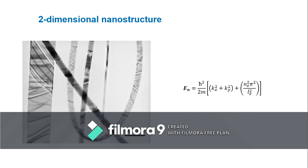Now let us discuss about two-dimensional nanostructures. Two-dimensional nanostructures are mainly extended in two dimensions and one of their dimensions is in the nanoscale. Along the third dimension, which is in nanoscale, the motion of the electron is quantized. For example, in a two-dimensional nanostructure in the xy plane, the thickness of the film is very small along the z direction. The electron is confined in the xy plane with two degrees of freedom, and its energy can be expressed as En = (ℏ²/2m)(kx² + ky²) + (n²π²ℏ²)/(2mLz²). Nanosheets and nanoribbons are good examples of two-dimensional nanostructures.